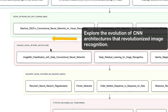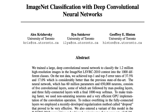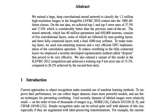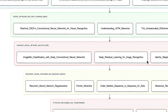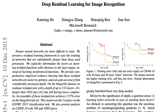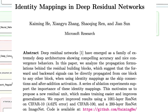Next is Advanced Neural Network Architectures, where you explore the evolution of CNN architectures that revolutionized image recognition. First, 'ImageNet Classification with Deep CNNs' — understanding the landmark AlexNet architecture that kick-started the deep learning revolution. Then 'Deep Residual Learning for Image Recognition,' learning about ResNets and how skip connections solve the vanishing gradient problem. Lastly, 'Identity Mapping in Deep Residual Networks,' exploring refinements to the ResNet architecture for improved performance.